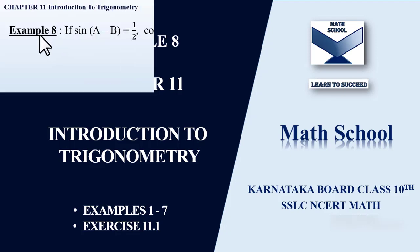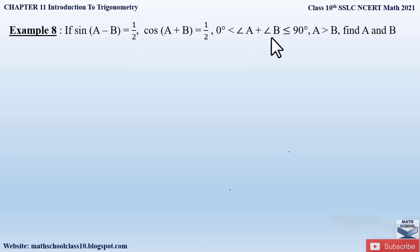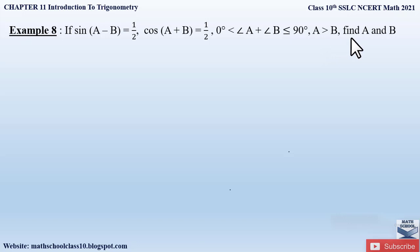Now quickly let us begin with the video. Example 8 from Chapter 11 Introduction to Trigonometry says: if sin(A - B) is equal to half and cos(A + B) is equal to half, with the condition that angle A plus angle B lies between greater than 0 degrees and less than or equal to 90 degrees, and also that angle A is greater than angle B, find A and B.